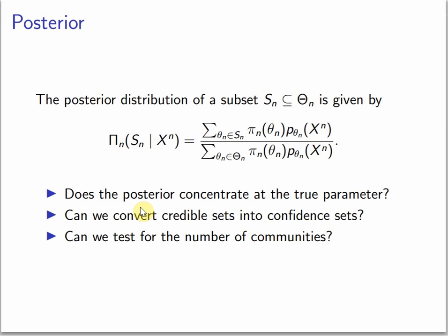The posterior distribution is given by the Bayes formula. Questions that we may ask: Does the posterior concentrate at the true parameter? Can we convert credible sets into confident sets? And can we test for the number of communities?